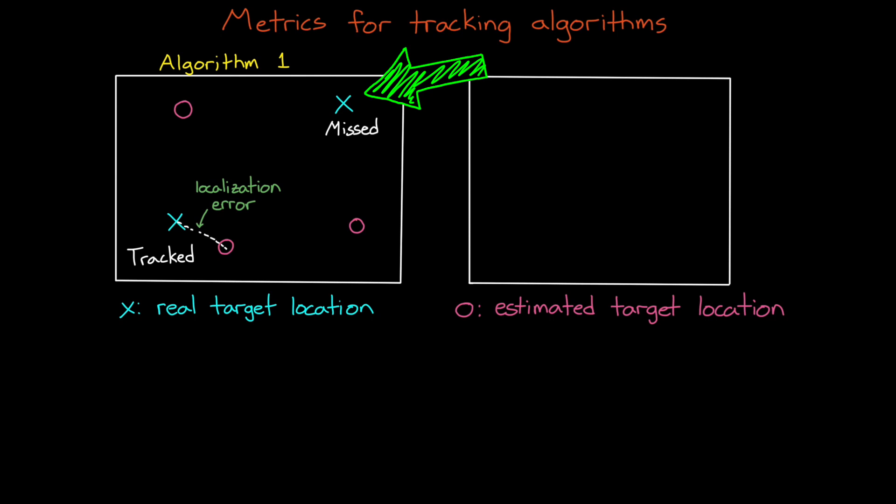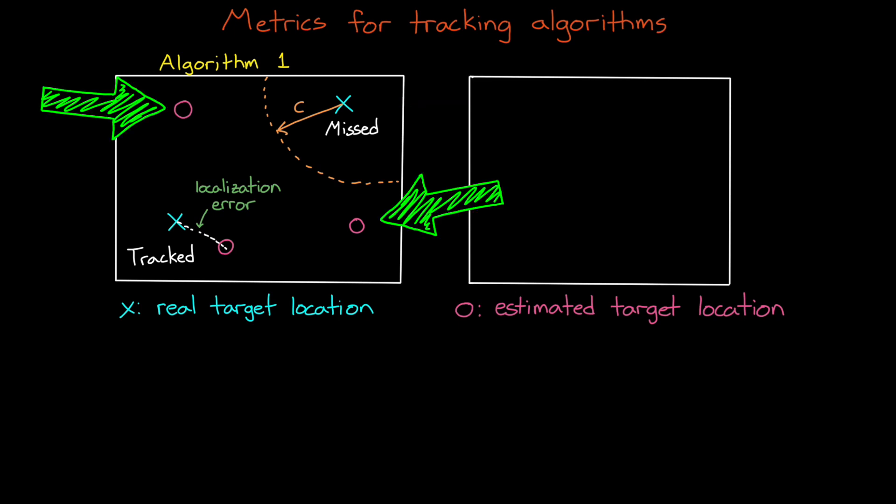And if we knew the true state of the targets, that's the X's, which we could get from a simulation, then we could determine that this target is being tracked with some amount of error. However, this target was missed since there's no estimates within the distance C of it. And C, by the way, is called the cutoff distance. It's a tunable parameter that you can set to indicate how far away an estimated track would have to be from a true track before you would claim that they are not of the same object. And then these other two estimated tracks are false tracks since there are no true targets within a distance C of them.